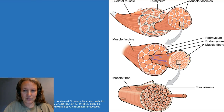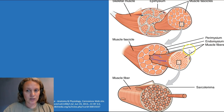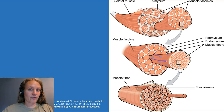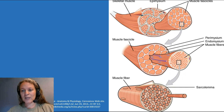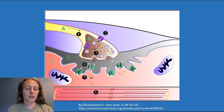Muscle cells also have another specialized organelle called the sarcoplasmic reticulum, which might remind you of the endoplasmic reticulum from basic cellular physiology. The sarcoplasmic reticulum is just a modified smooth endoplasmic reticulum, and its main job is to store and release calcium. We'll talk about that more. So a muscle fiber is a modified elongated cell with specialized organelles — in particular the myofibrils and the sarcoplasmic reticulum.